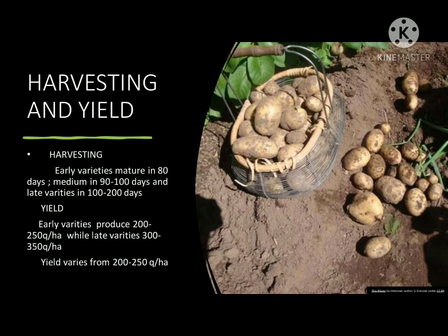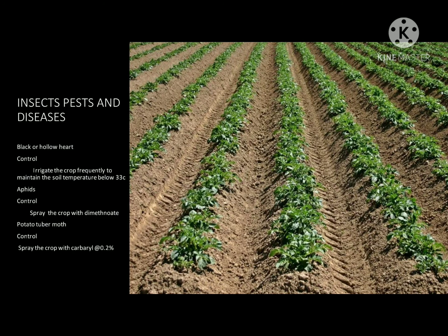Insects and pests: for black or hollow heart, irrigate the crop frequently to maintain soil temperature below 33 degrees Celsius. For control, spray the crop with dimethoate. For potato tuber moth, spray the crop with carbolin at the rate of 0.2 percent. This concludes the discussion about the potato crop.